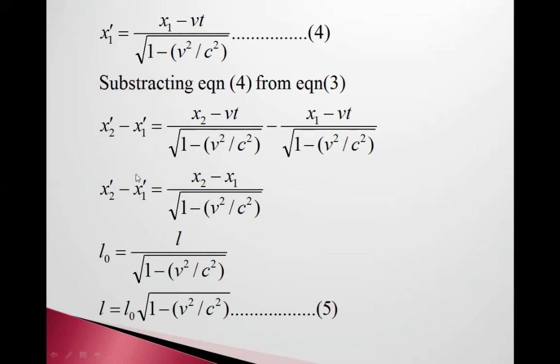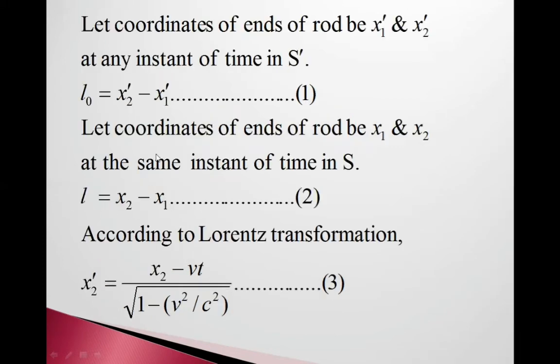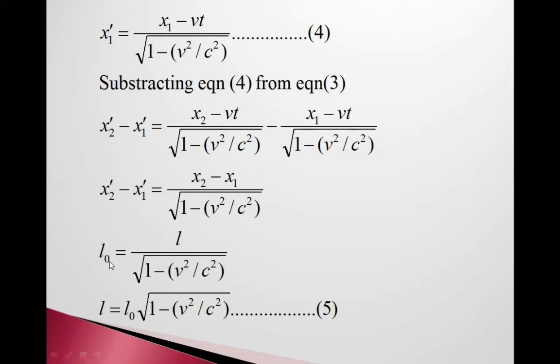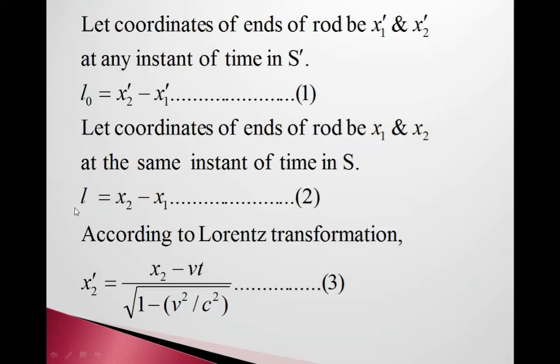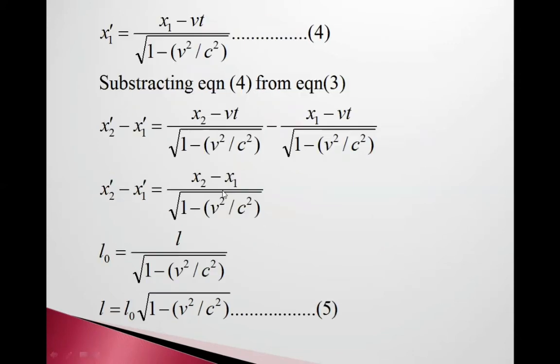So this x2' minus x1' is L0, the proper length of that rod in frame S', which equals x2 minus x1, which is L in frame S.